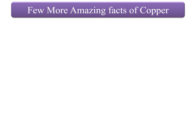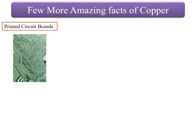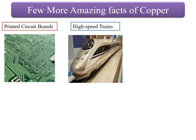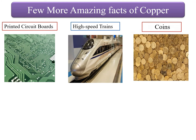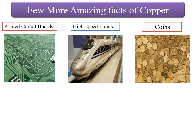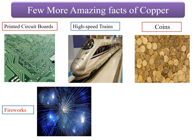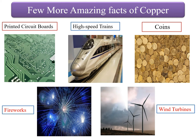A few more amazing facts: copper is used in printed circuit boards found in electronic and electrical components. High-speed trains contain about 20 tons of copper components, mainly in transformers and drive motors. For coin making, copper alloys such as Nordic Gold — developed specifically for currency — are used in euros. The color of fireworks depends on their ingredients, and copper contributes a blue color. In wind turbines, approximately 30 tons of copper per turbine are used in ring generators.